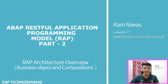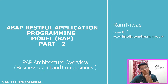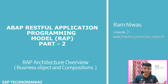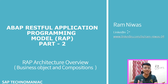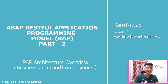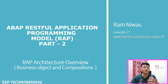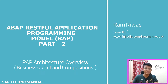Hello everyone, welcome to SAP Technomaniac. This is the second part of the ABAP RAP programming model. In this part, we will start with the RAP architecture overview. Whenever we start something, we have to first understand the architecture. In this video, we will focus on the business object, what it is, and the difference between compositions and associations.